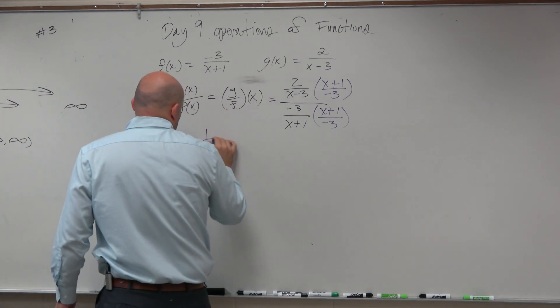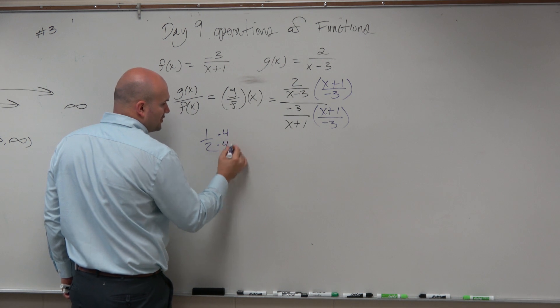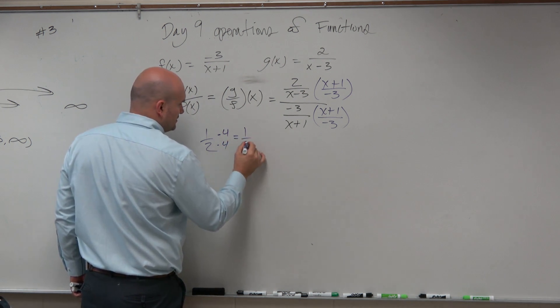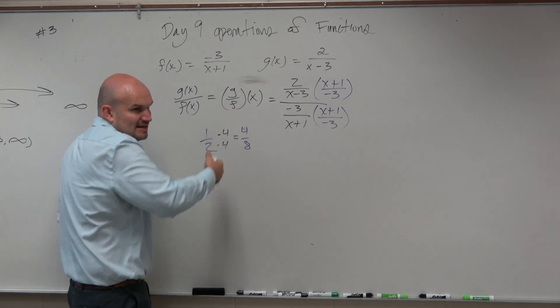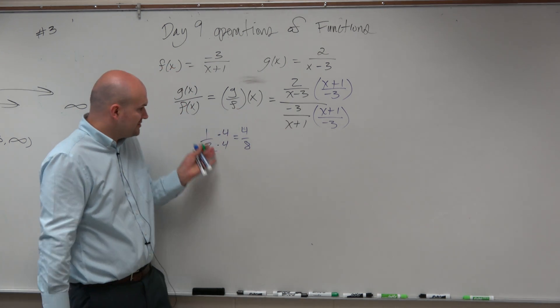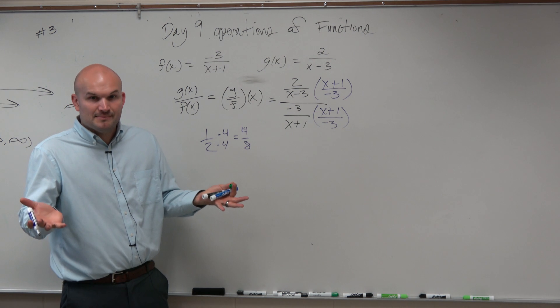Like, for instance, 1 half. If I take 1 half and I multiply by 4 over 4, do I still have the same ratio? Yes. Yeah. Right? So you can multiply the same. As long as you multiply the same number on top and bottom, you're still keeping the fraction the same.